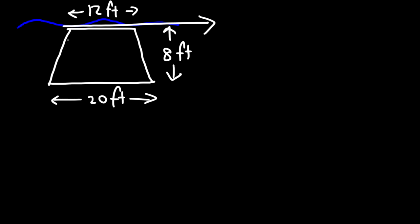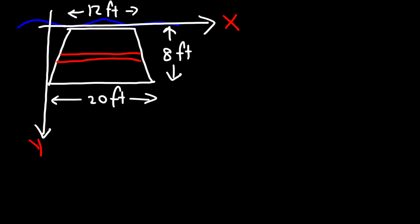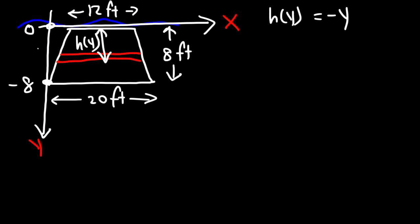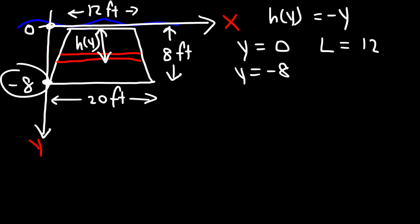We again choose the water surface as the x-axis and this part as the y-axis. So h(y) is negative y, and we integrate from c = negative 8 to d = 0. We need to determine l(y): when y is 0, the length is 12, and when y is negative 8, l is 20.